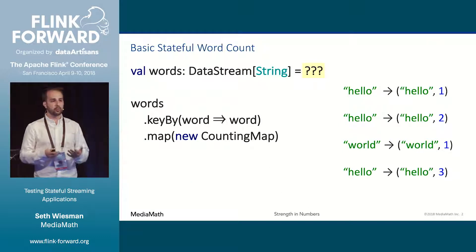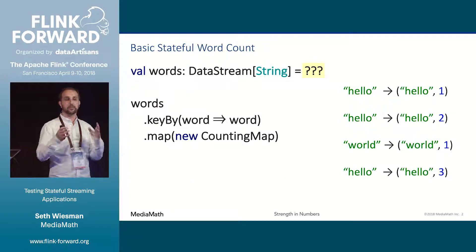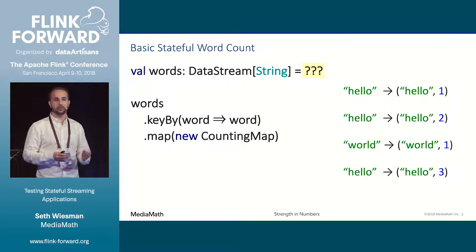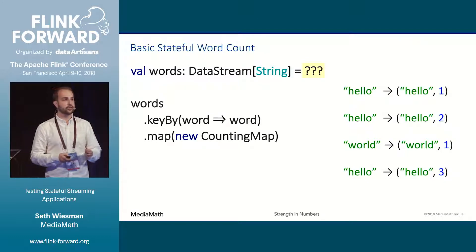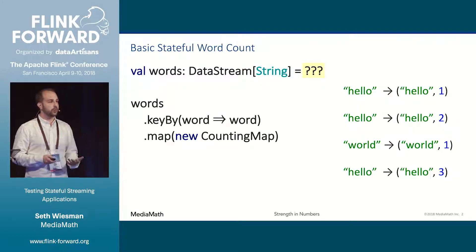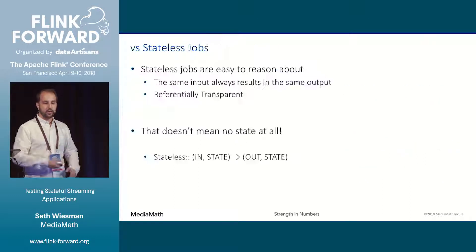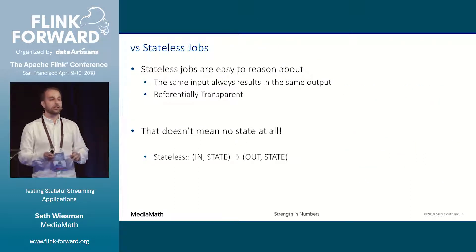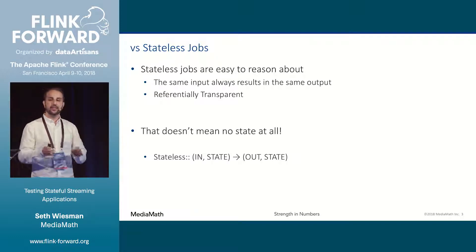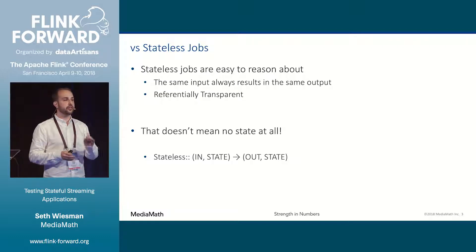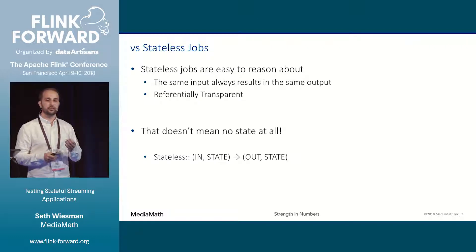Consider this word count. While it's a fairly simple data stream, I'd argue that this map function is deceptively difficult to reason about. That's because there's no way for us to know what this code is going to output without having witnessed all previous invocations. And if we can't reason about the output of our code, there's no way for us to know if that output is correct.